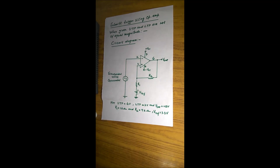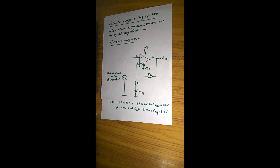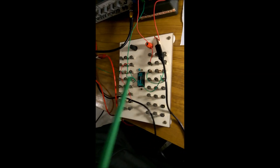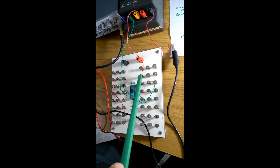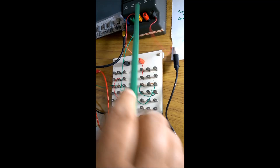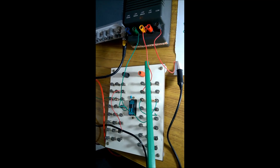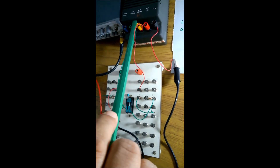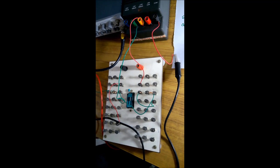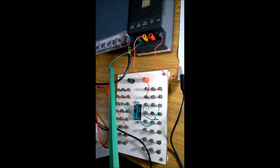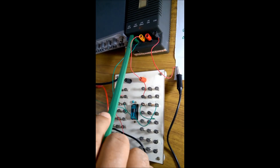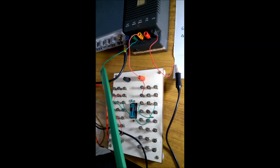Pin 7 is connected to plus VCC, which in our case is +12 volt. Counting pins 1 through 7, you can see pin 7 is connected to the +12 volt via a red wire. Pin 4 is connected to minus VCC, that is minus 12 volt. Counting pins 1 through 4, the green wire connects pin 4 to minus 12 volt.